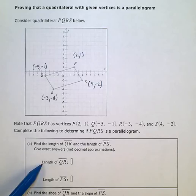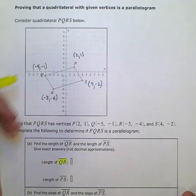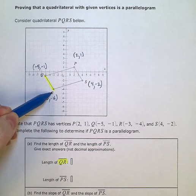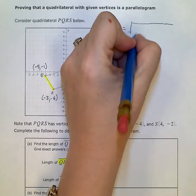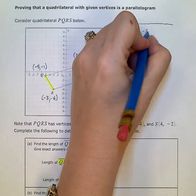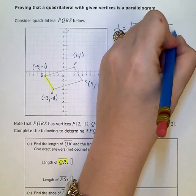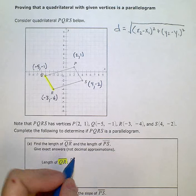First, we're asked to find the length of QR. QR is this side right here, and we want the distance from Q to R. We're going to use the distance formula: the square root of (x₂ - x₁)² + (y₂ - y₁)². So our coordinates are Q(-5, -1) and R(-3, -4).